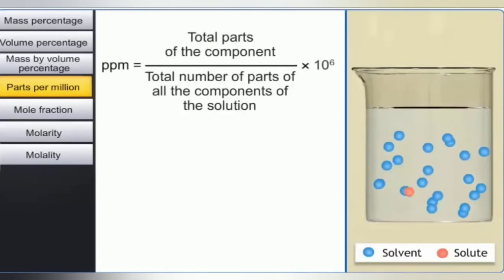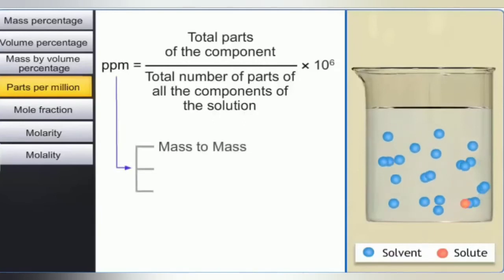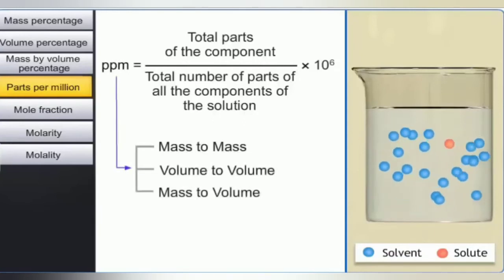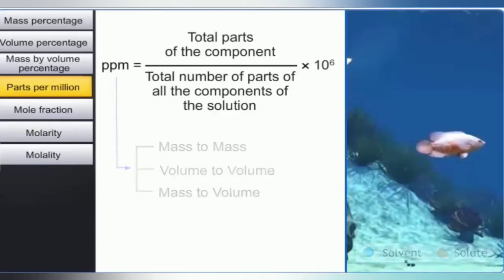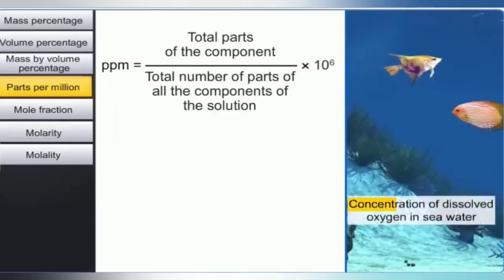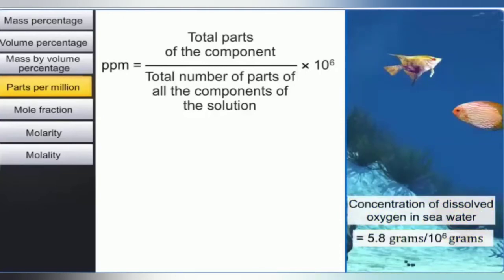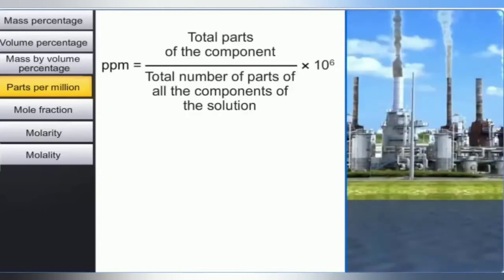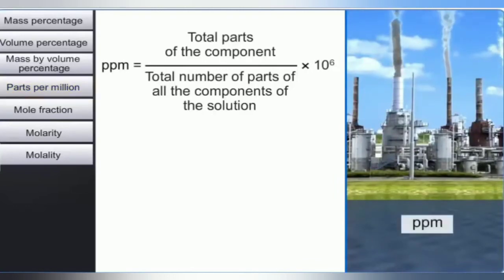The concentration can be expressed as mass to mass, volume to volume, or mass to volume. For example, the concentration of dissolved oxygen in seawater is 5.8 grams per 10⁶ grams of seawater, written as 5.8 ppm. The concentration of pollutants in seawater or the atmosphere is often expressed in terms of parts per million.